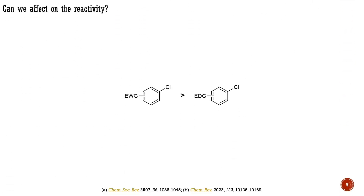Now, let me describe how one can influence the activity of coupling partners. The reactivity of an electrophilic coupling partner can be enhanced by introducing electron-withdrawing groups into the system. Conversely, the introduction of electron-donating groups effectively reduces the reactivity of the electrophilic coupling partner. Electron-withdrawing groups increase the electron deficiency of the system, subsequently enhancing the polarity of the carbon-halogen bond. Meanwhile, electron-donating groups raise the electron density in the system and increase the rigidity of the carbon-halogen bond.